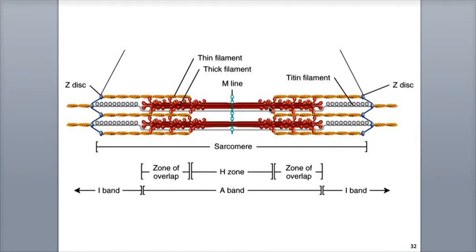Look at the other end of titin, which attaches to the Z-disc. These coils represent titin's elasticity, where titin allows the sarcomere the ability to extend or stretch four times its normal resting length, and then spring back to its original length without any damage. Titin helps give the sarcomere most of its properties of extensibility and elasticity.